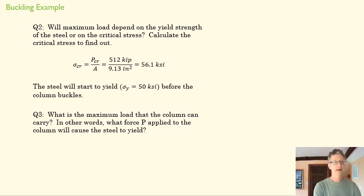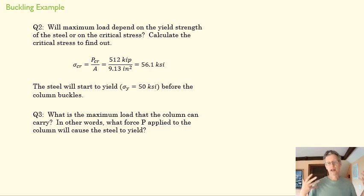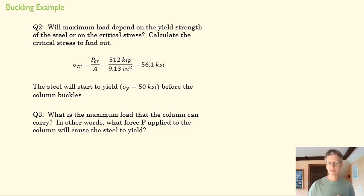So we go back and solve for the force P applied to the column that will cause the steel to yield. This really isn't even a buckling problem — it's an axial force problem. We know the cross-sectional area and the yield stress, so we can find the force P. And that's it for buckling.